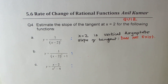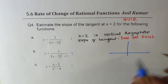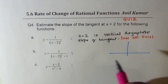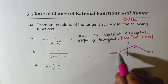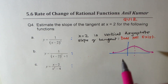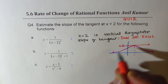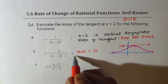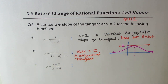For the second function, 1 over (x minus 2) squared plus 1, the denominator is never zero, so there is no asymptote. Substituting x equals 2 gives a value of 1, which is the maximum point. The graph has a peak at x equals 2, so the tangent line there is horizontal, meaning instantaneous rate of change is 0.